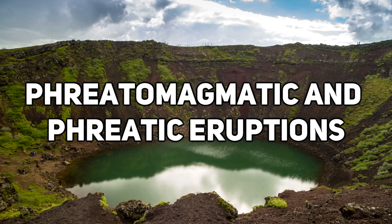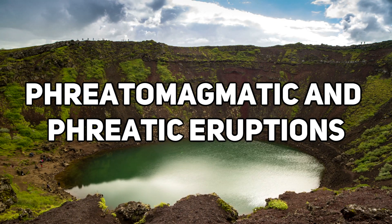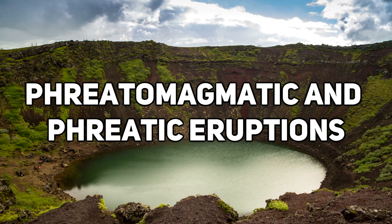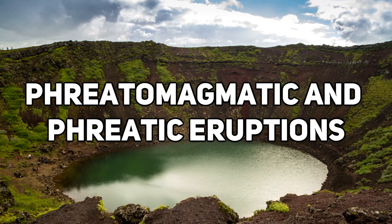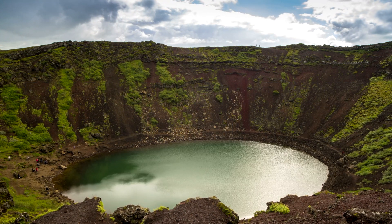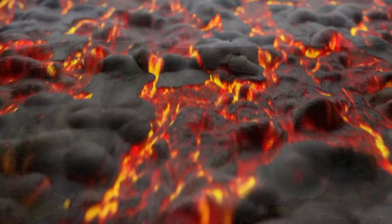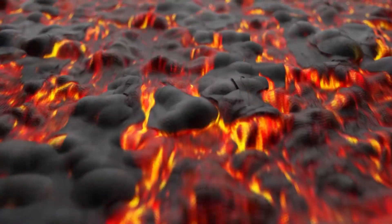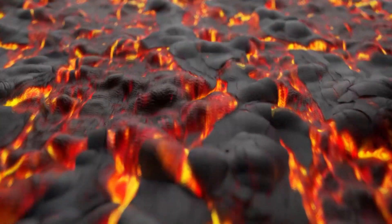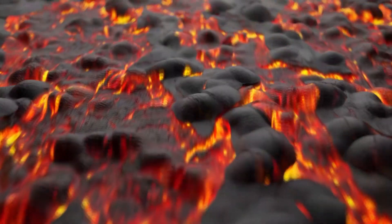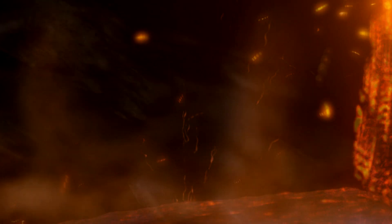In this video, we're diving into the phreatomagmatic and phreatic forms of volcanic eruptions. Just like in the magmatic class, there exists the potential for deadly and powerful eruptions to occur in these two classes. Unlike the magmatic type, however, a certain factor is required for both eruptive types that, if not present, makes it impossible for them to occur. This shared necessity is the involvement of water. The difference between the two classes is held in how the water itself interacts with the volcanic magma chamber.